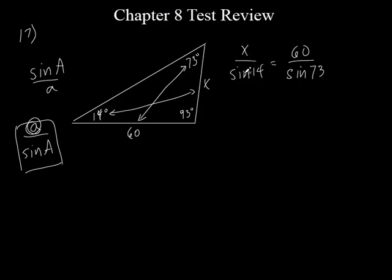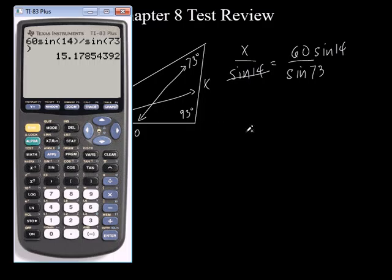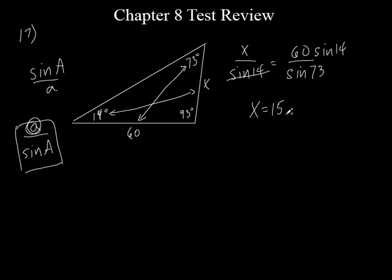We made this easy for ourselves. All we have to do is multiply both sides by the sine of 14 — we're dividing by sine of 14, so we multiply to cancel it. So it's 60 times the sine of 14 divided by the sine of 73. Punching that into the calculator, we get 15.17, and rounded to the nearest tenth, x equals 15.2.